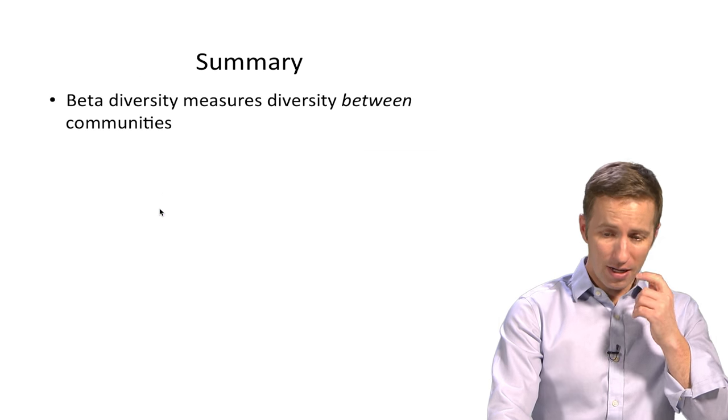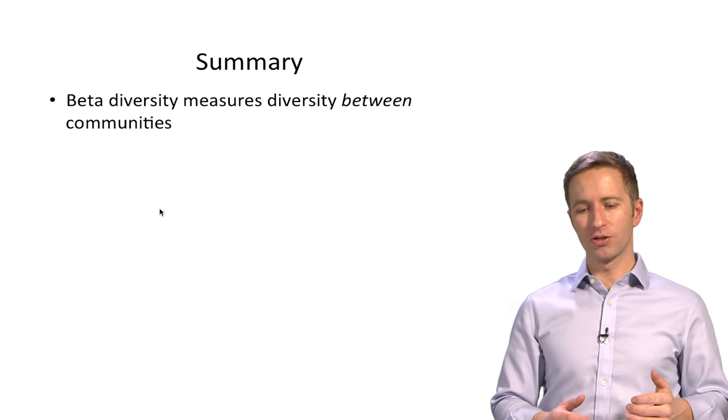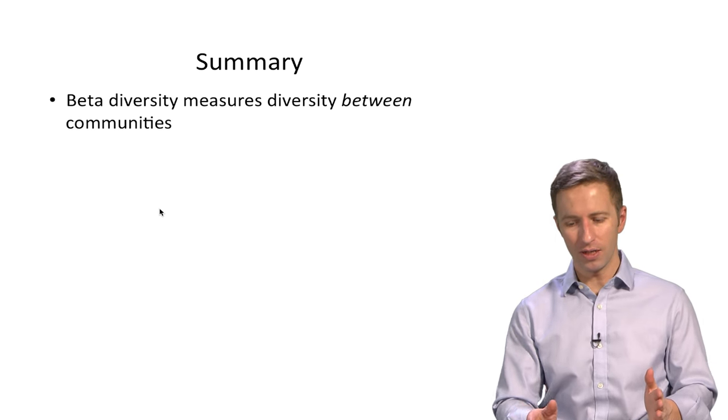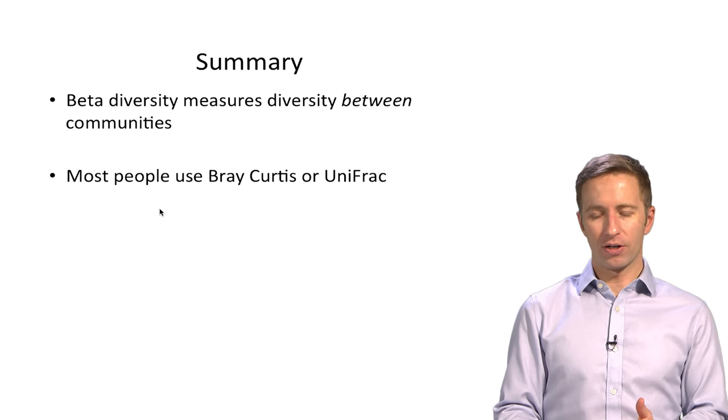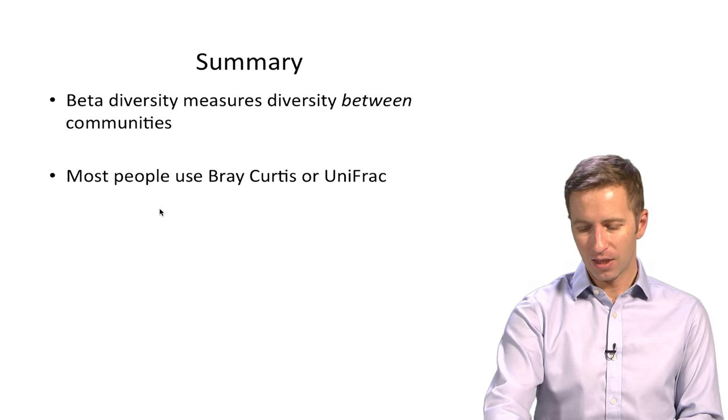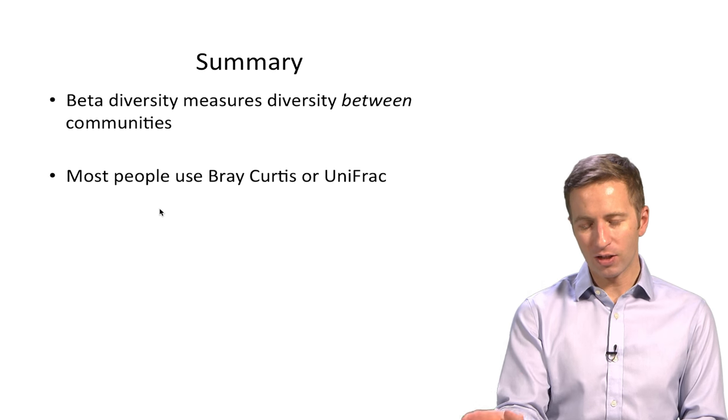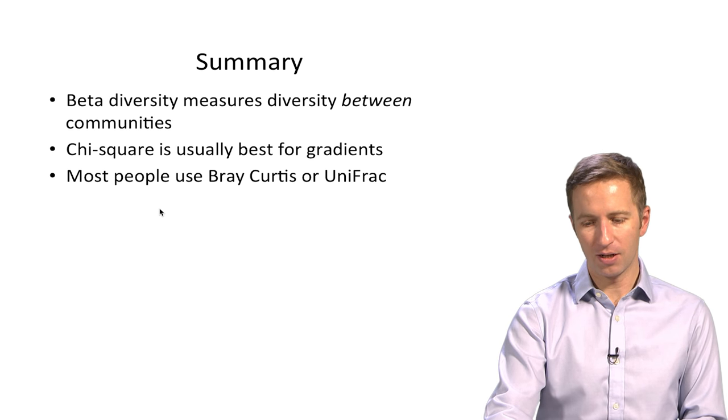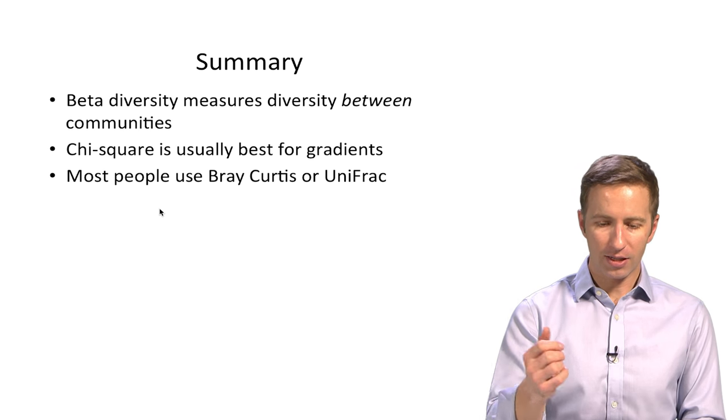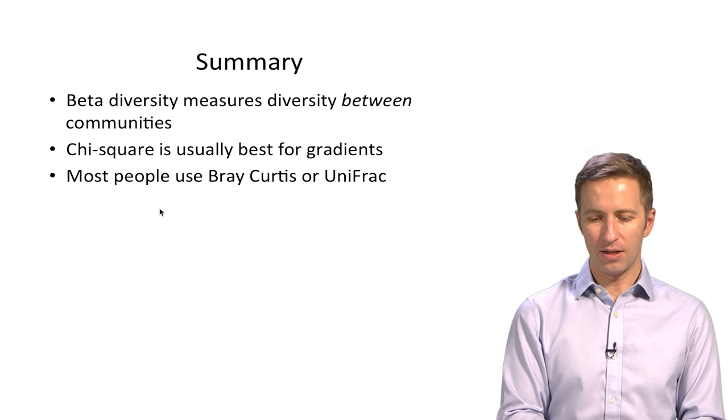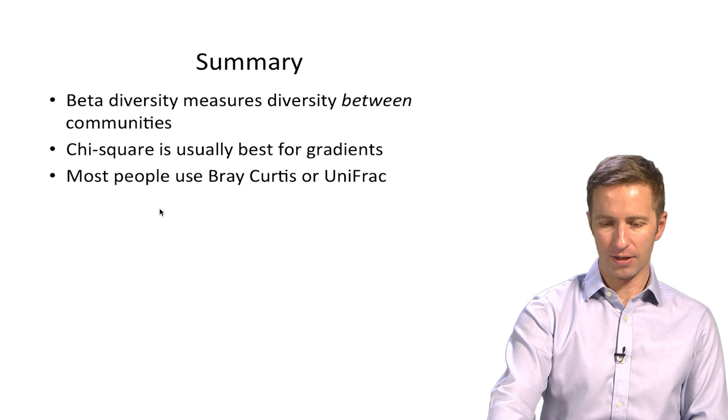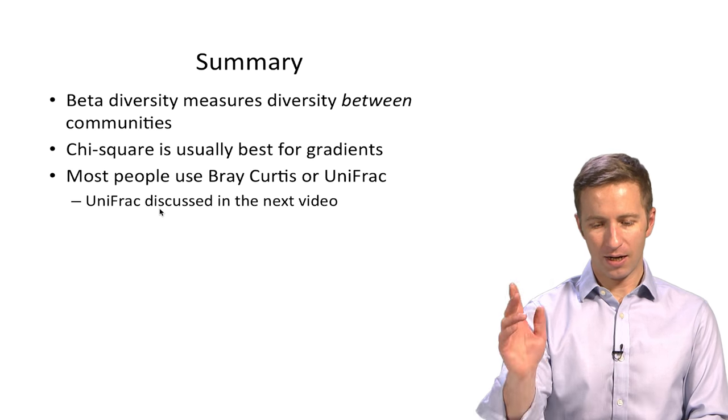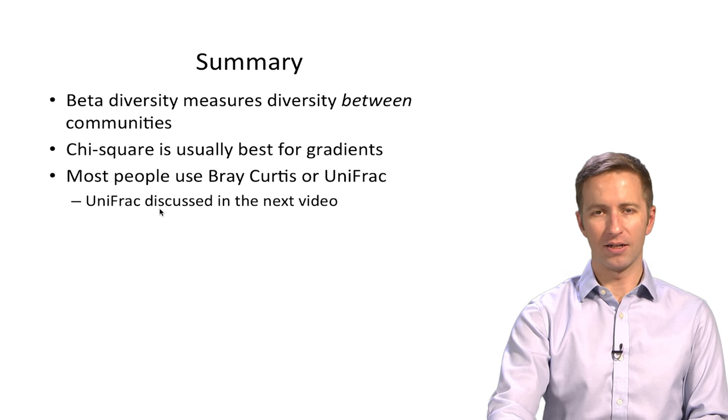So in summary, beta diversity measures the diversity between communities. In general, most people use Bray-Curtis or Unifrac or both in the microbiome. We haven't talked about Unifrac yet. That's going to be in another video. And chi-square is usually the best to use for gradients. And as I said, Unifrac will be discussed in the next video.